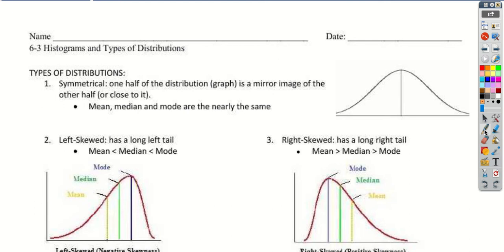Sorry I'm not there again, but we do want to continue on with our statistics information here. So we're going to do two things today. We're going to talk about the types of distributions. We've already looked at our graph types, our dot and box plots. So we're going to talk about how do we analyze these and get some information from them. The first thing we're going to talk about is a type of distribution.